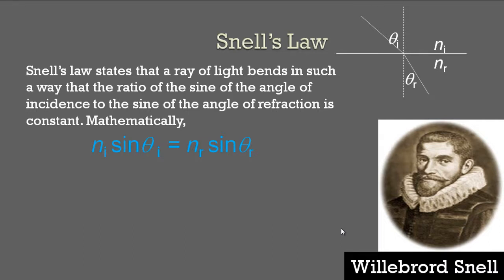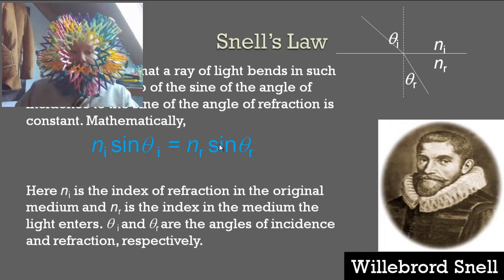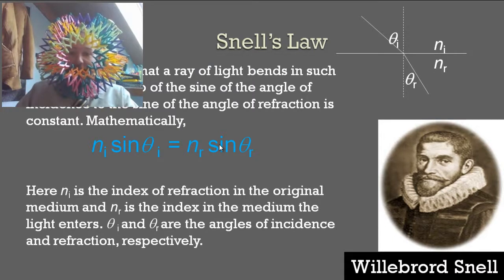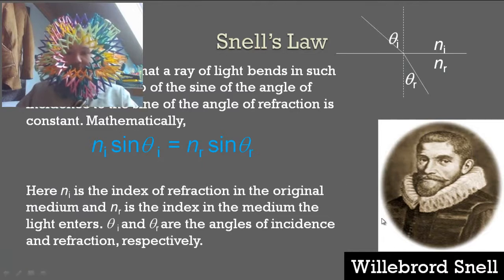Here's Snell's law, the one we'll be using. Snell's law states that a ray of light bends in such a way that the ratio of the sine of the angle of incidence to the sine of the angle of refraction is constant. Mathematically, it looks like this: the index of refraction of the incident media, which in the last picture was air, times the sine of the angle of incidence equals the index of refraction in the media that we're transferring the light to times the sine of the angle of refraction. Ni is the index of refraction in the original medium, and Nr is the index in the medium the light enters. Theta i and theta r are the angles of incidence and refraction respectively.